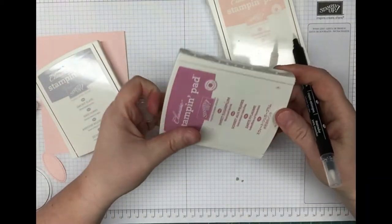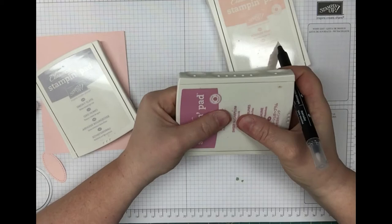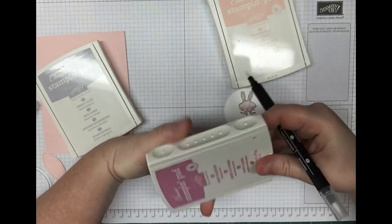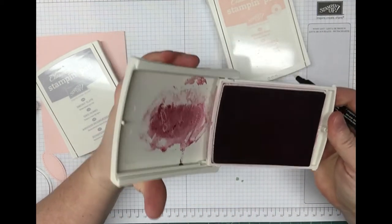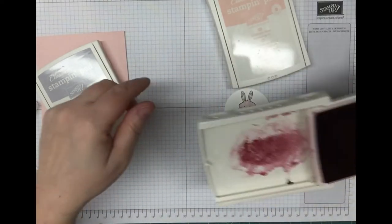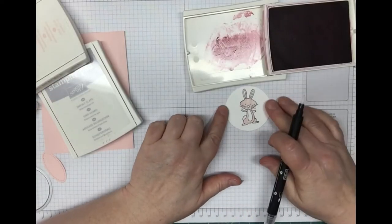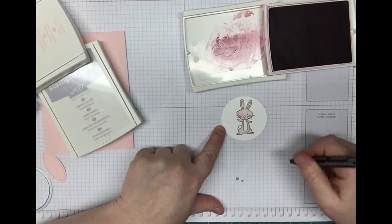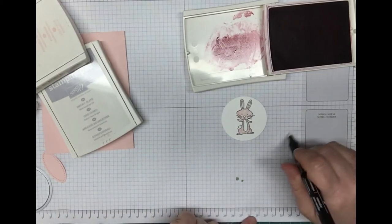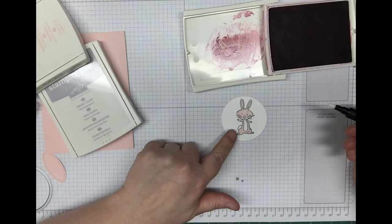Now I'm going to take the sweet sugarplum. What you want to do is give it a squeeze in the center, and that will apply some ink for you to use. I used the powder pink on the bunny, so I'm just going to run this pen over my scrap paper to clean it.